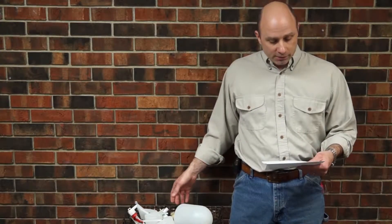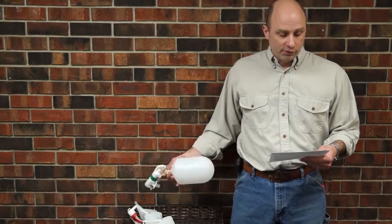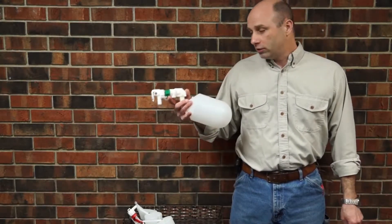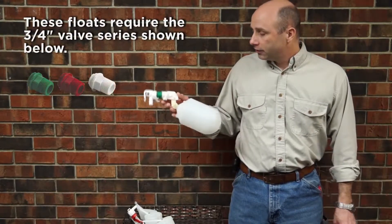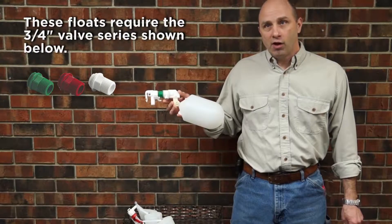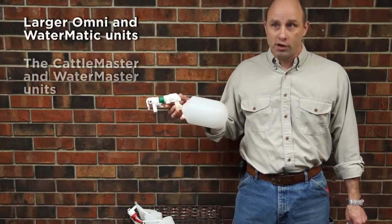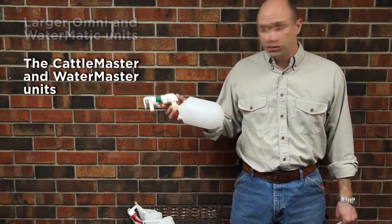First one we're going to talk about is our 18314. This is our float for our three-quarter inch valve. This is going to be used in all of the larger units, your larger Omnis, the larger Watermatics, the larger Cattlemasters, all of those kind of units.